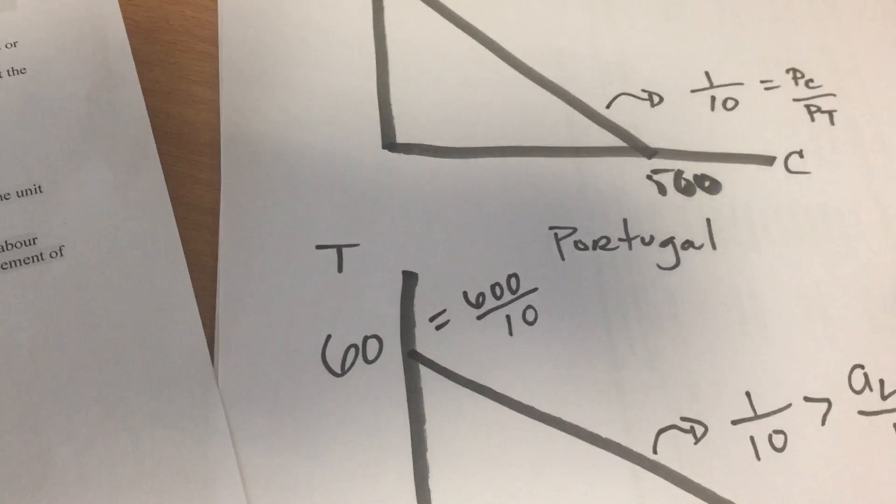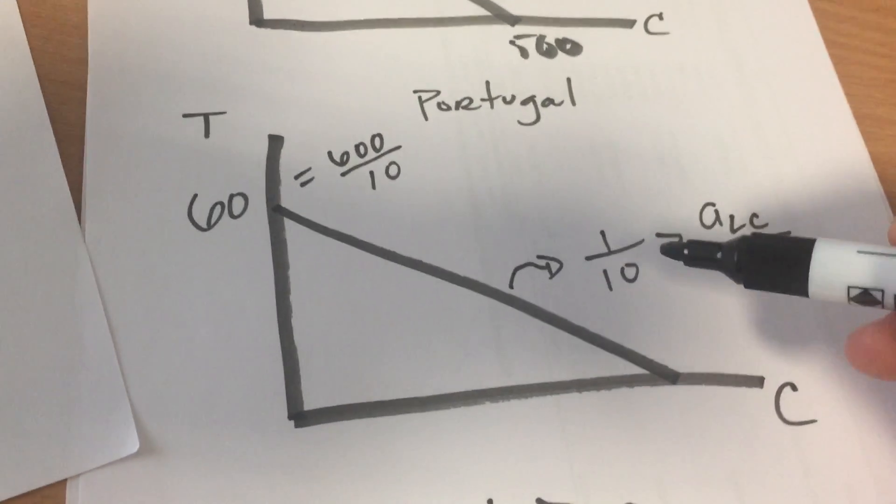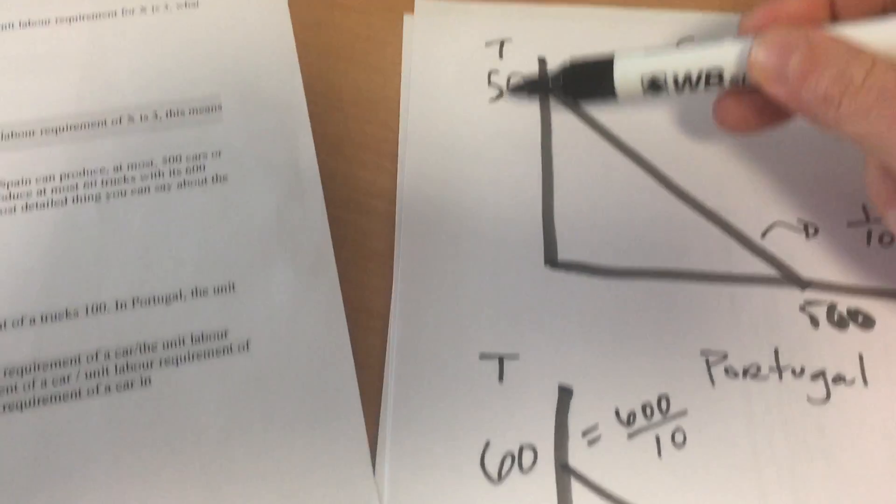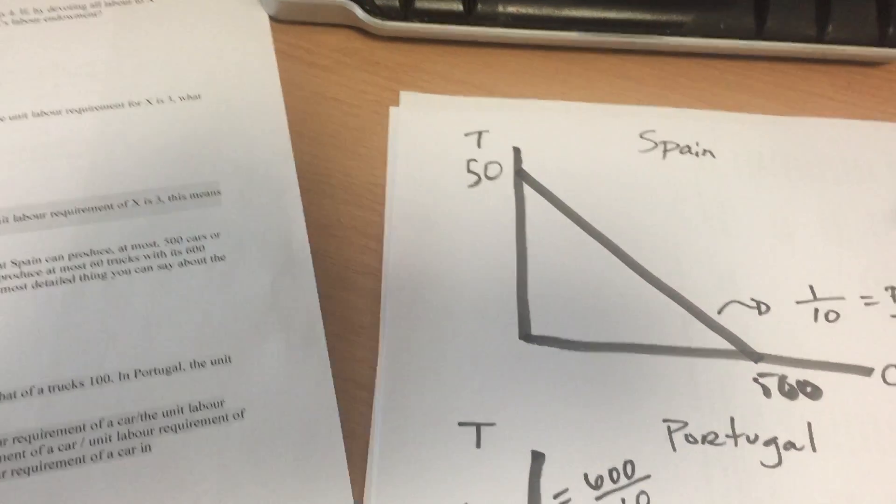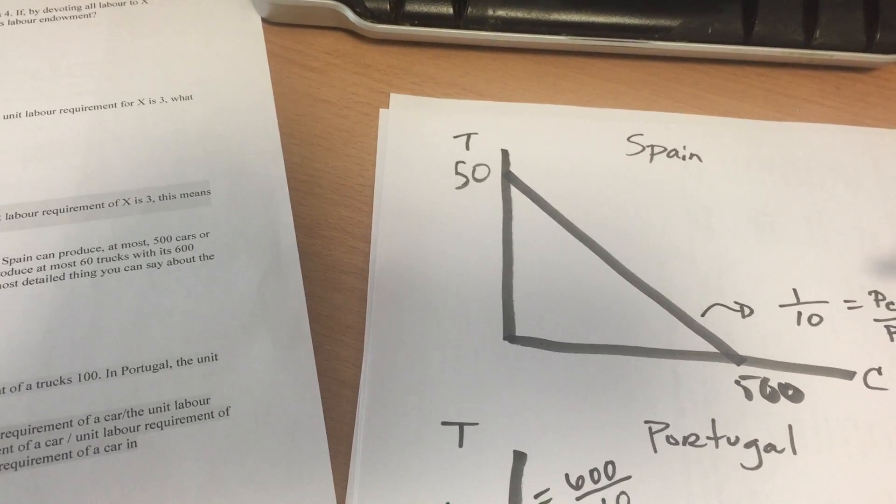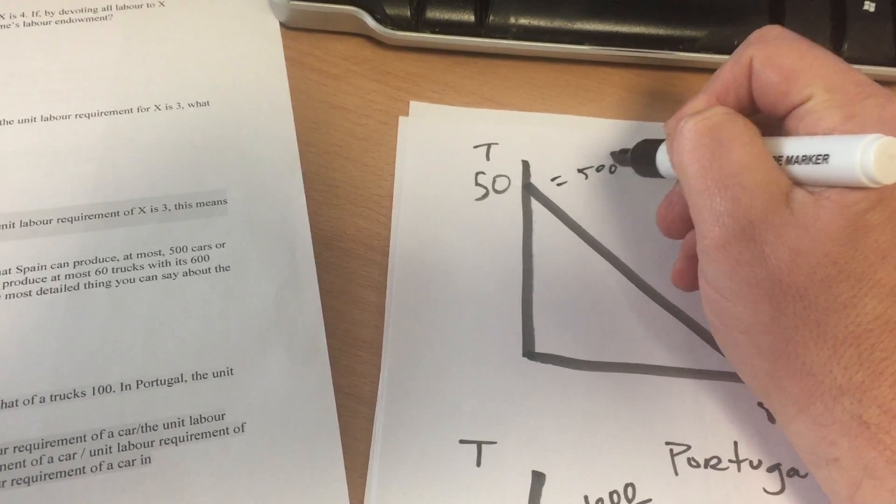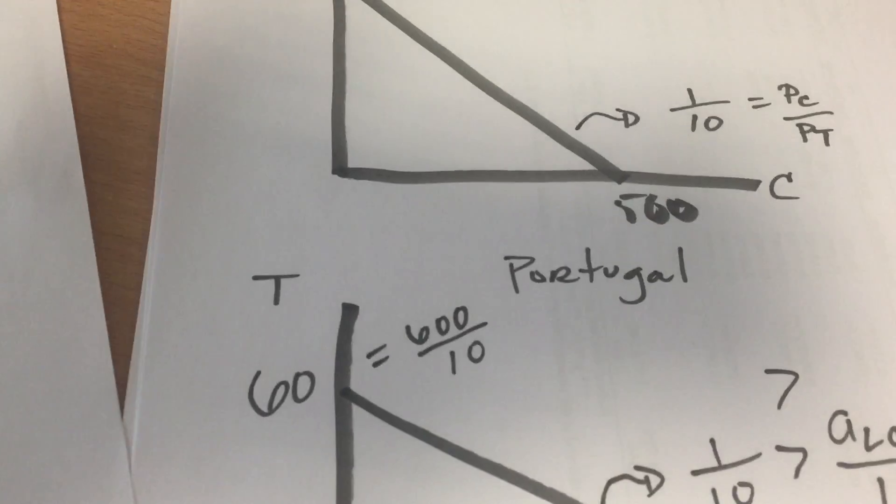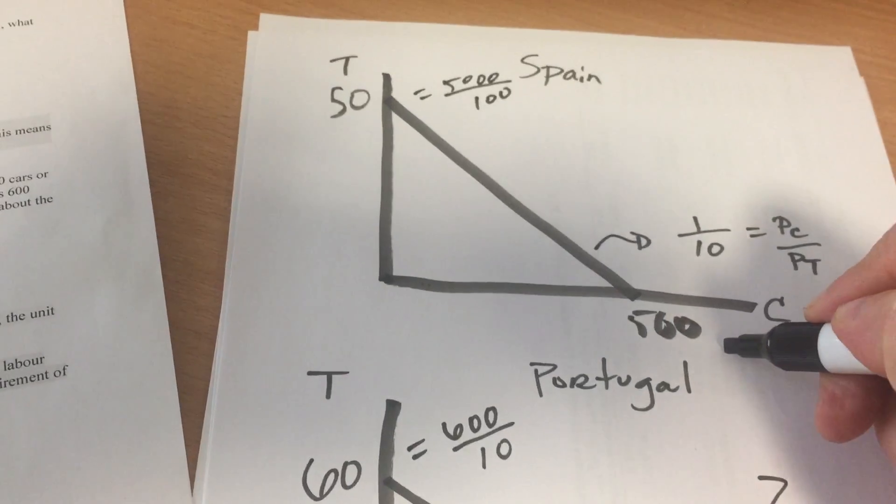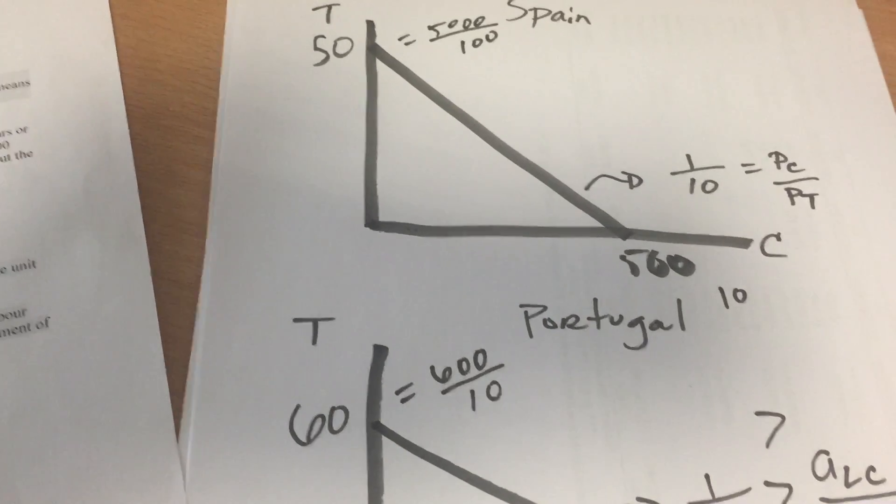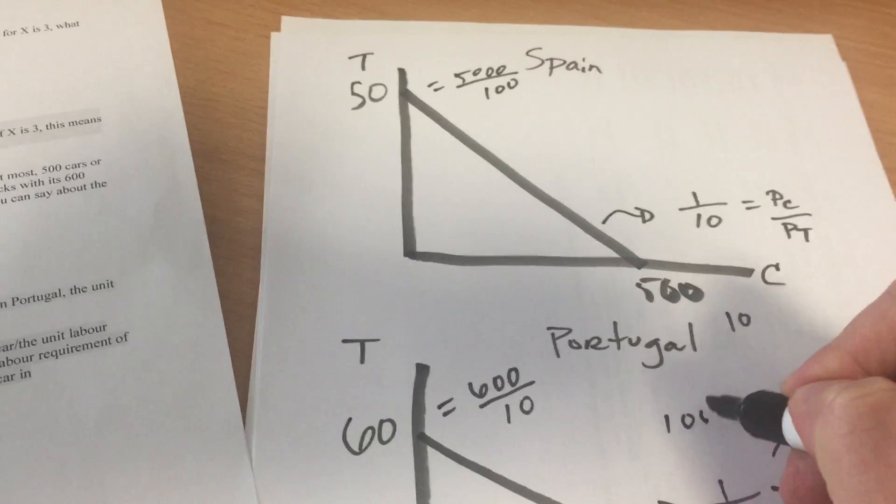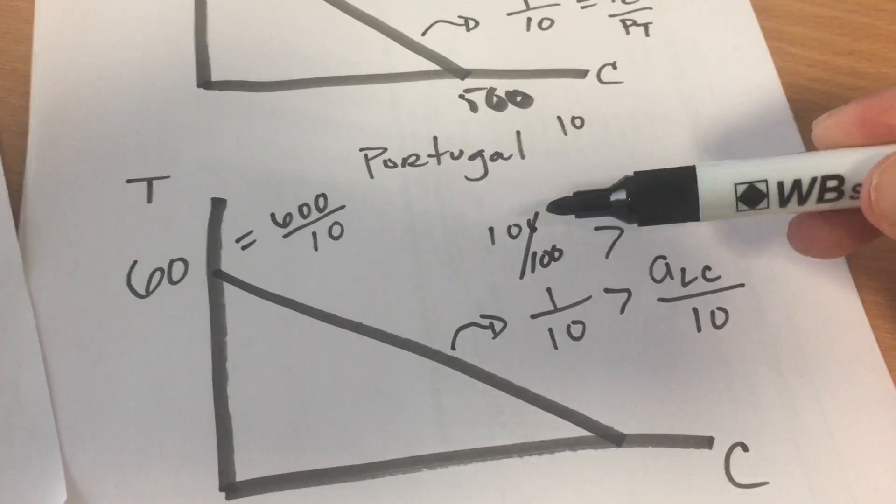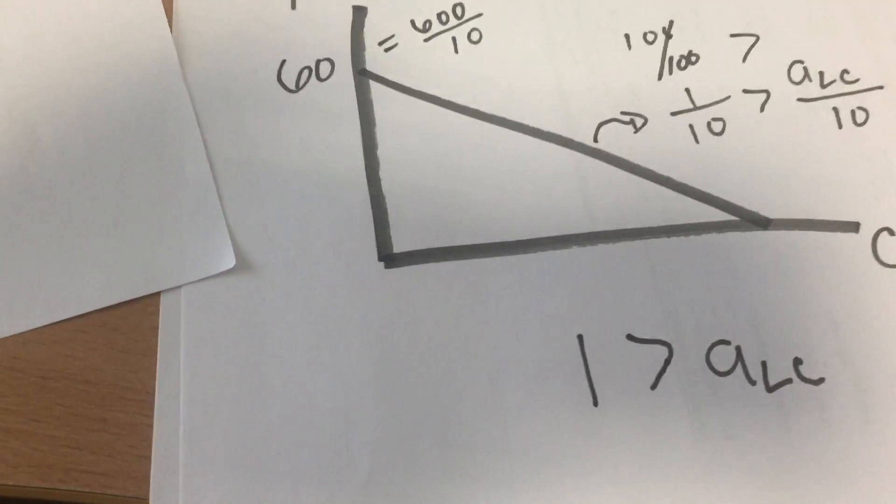Now, another way to do it is to say ALC over 10 has got to be less than one-tenth. Another way of saying that is just that's got to be less than the ratio of the unit labor requirements for Spain up here. So if they have 5,000 units of labor, they can make 50 trucks. Well, that's 5,000 over 100. That's the unit labor requirement for trucks there. 500 out of your 5,000. That's where the unit labor requirement there would be 10. So you could say 10 over 100 has got to be greater than ALC over 10. Works out the same thing. 100 over 100 is 1.